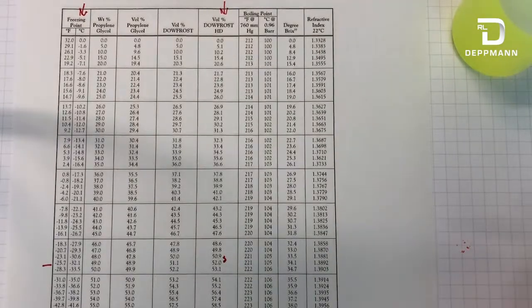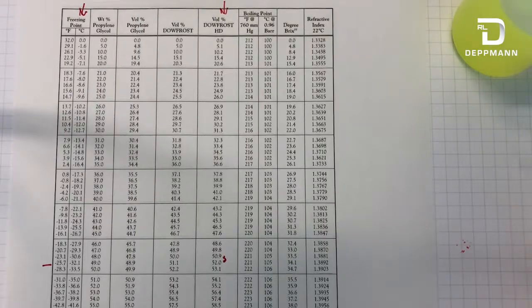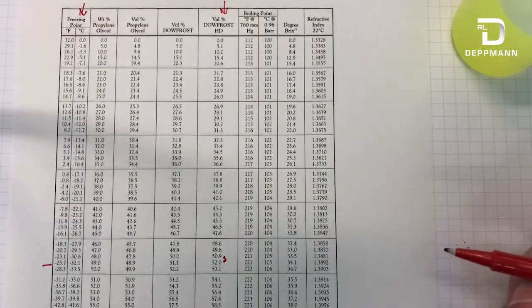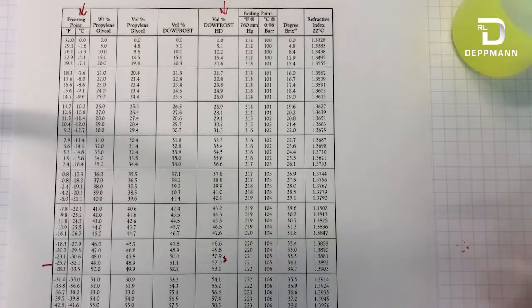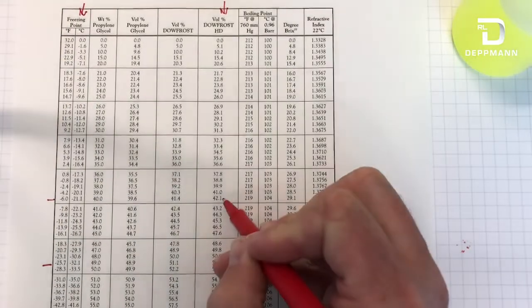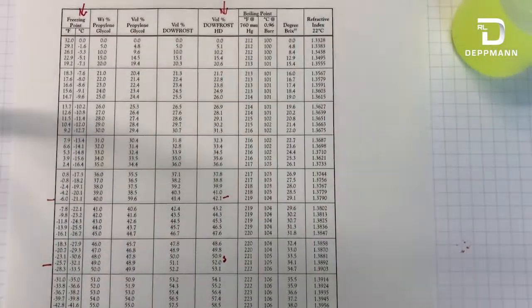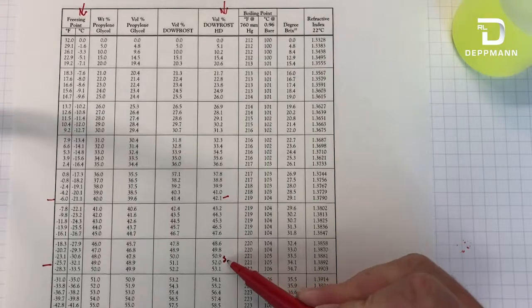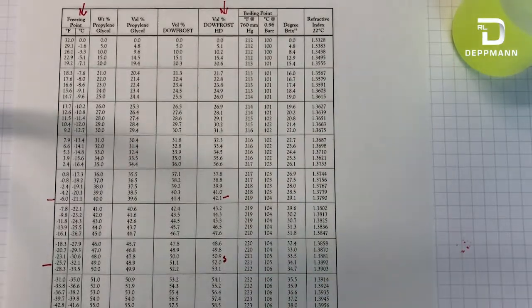But what could happen is over time, a system that's opened and closed, you could start to get your system to become diluted. And for this instance, if we got a reading that was a lower temperature, let's say it was right around negative six degrees, our concentration is then only around 42 percent. We would want to evaluate adding fresh glycol to bring that concentration back up to the 50 percent design.